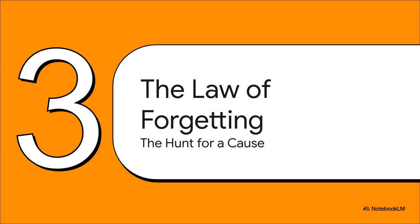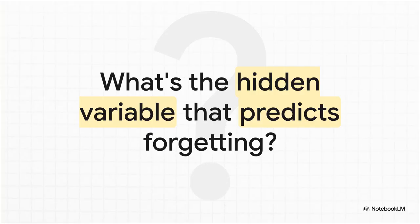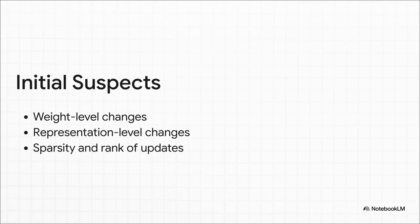So let's go on the hunt for what the paper calls the law of forgetting. So the crucial question becomes, what's the hidden variable? What's the single thing we can measure that will predict exactly how much an AI is going to forget, no matter which training method you use? Now the researchers did what any good detective would do. They rounded up the usual suspects.